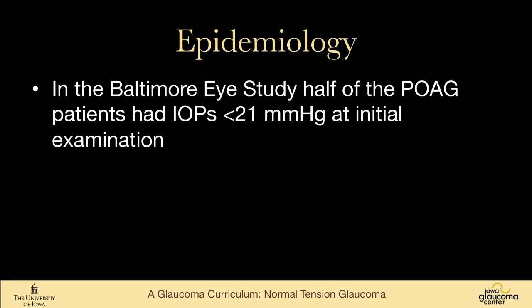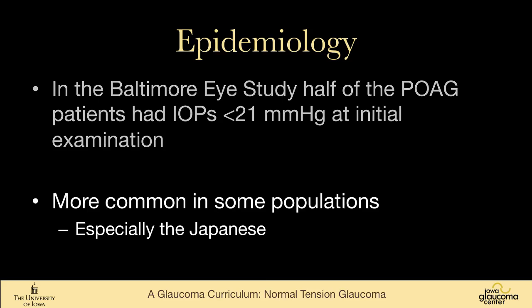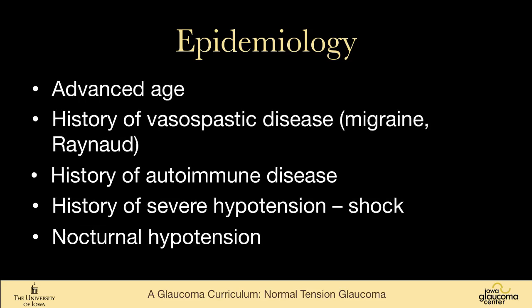In the Baltimore Eye Study, half of people who had primary open angle glaucoma had pressures that were in the normal range at initial examination. And in some populations, especially the Japanese, glaucoma at normal pressures is very common — more common even than in the US.